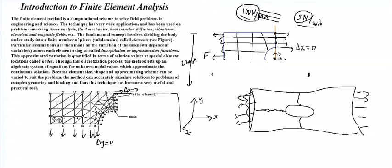The problem gives a distributed load of 100 newtons total. The edge is 20 millimeters, so you divide 100 newtons by 20 to get 5 newtons per unit and give that as the unit force to the computer.